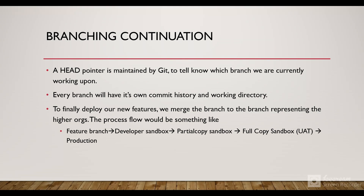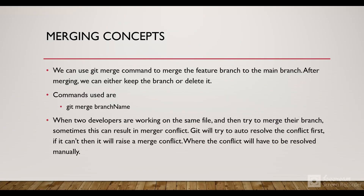To finally deploy new features, we merge the branch to the branch representing the higher org. The flow is: a feature branch is merged to the developer sandbox branch, that developer sandbox branch is merged to the partial copy sandbox, then to the full copy sandbox where UAT is done. After UAT is done, it is merged to the production branch, which indicates go-live.